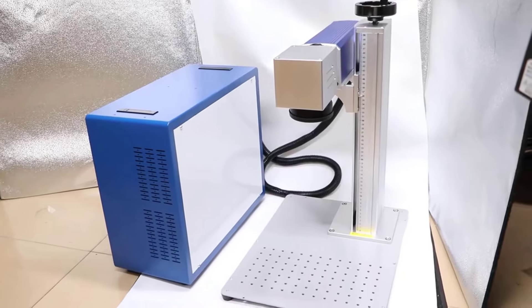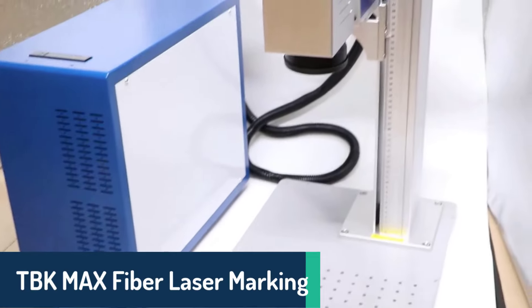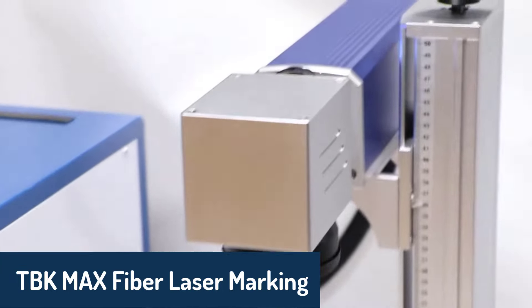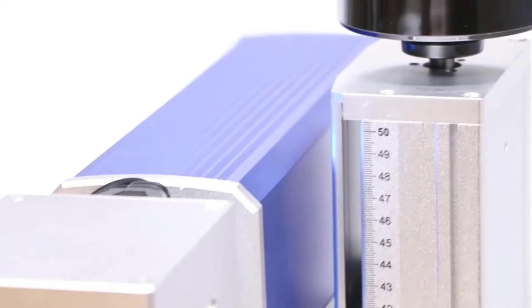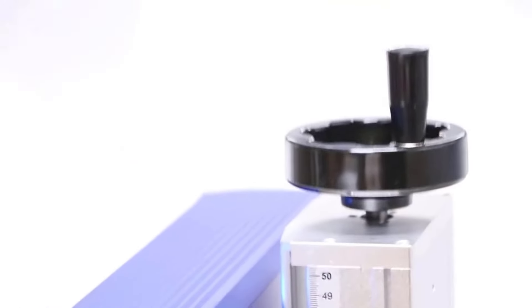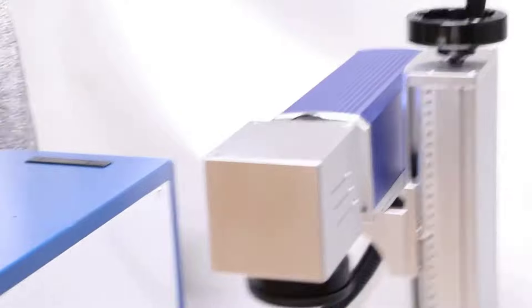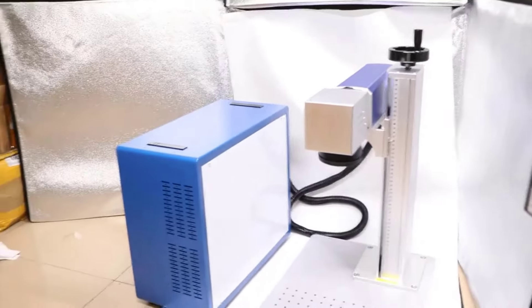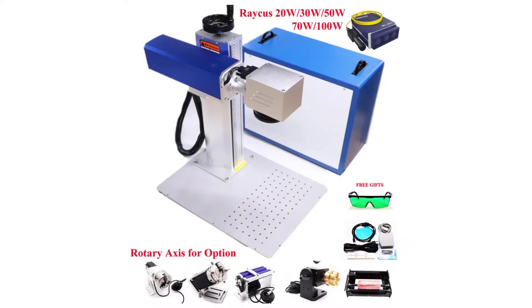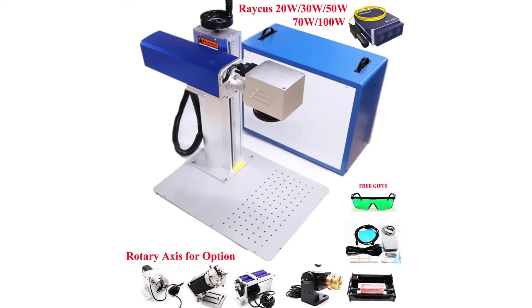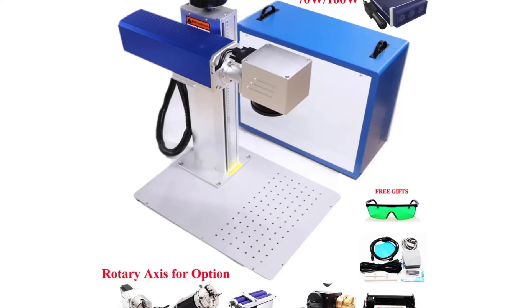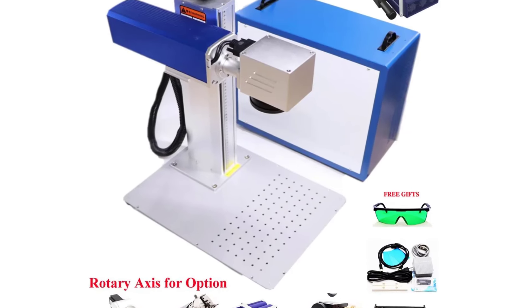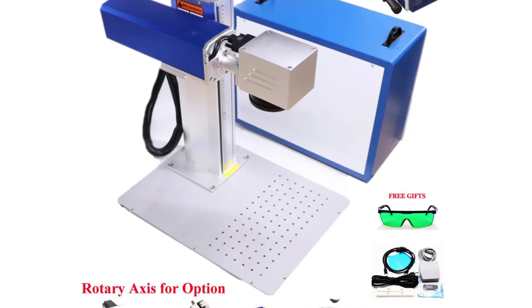Number four, we have the TBK Max fiber laser marking machine, a highly efficient model designed to cater to diverse marking requirements. Equipped with a laser power range from 20W to 100W, it features a default working area of 110 by 110 millimeters, with additional sizes available for customization.